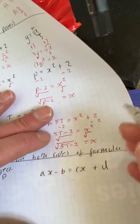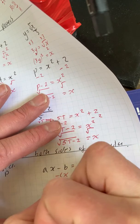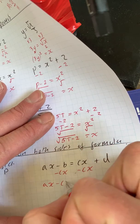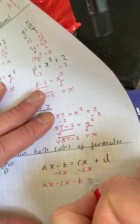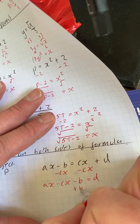Similar one here, trying to get x on its own, so I'm going to move this cx over to the other side. So I've got ax minus cx minus b is equal to d. Get rid of this b by adding to both sides.